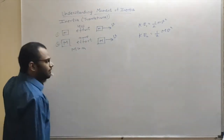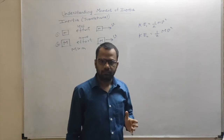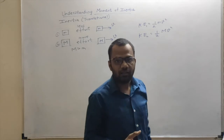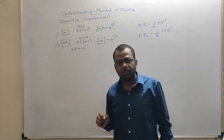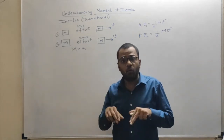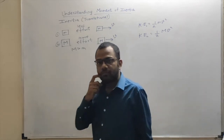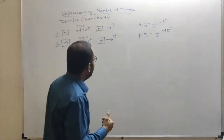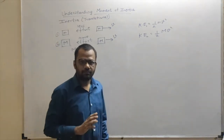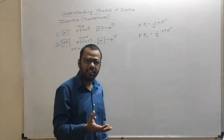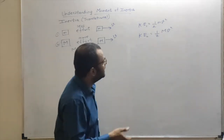Initially both were at rest; now both are moving with the same velocity v. But the second body provided more opposition — I had to spend more energy for it. So the second body had more tendency to remain at rest, meaning it had more inertia, because it had more mass. A body with higher mass has more inertia than a body with lower mass.